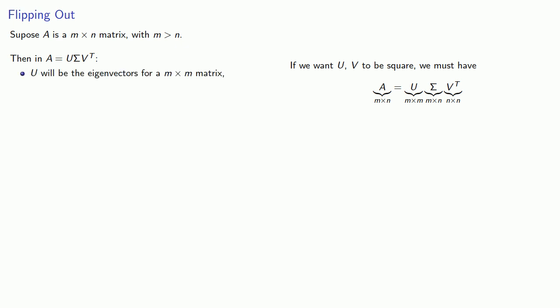And this means U will be the eigenvectors for an m by m matrix, V will be the eigenvectors for an n by n matrix, and Σ will be an m by n matrix. And again, since we're assuming that m is greater than n, we'll be lazy and find V and the first n columns of U.